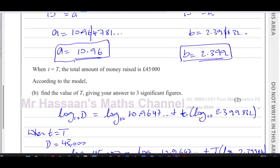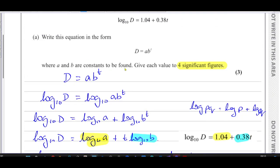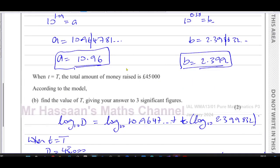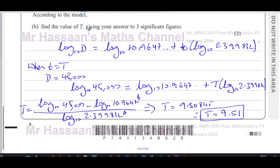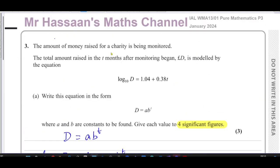Therefore, T equals 9.51 to 3 significant figures. That is the time, in months, it takes to raise that amount of money. So there is the answer to question 3 parts (a) and (b).